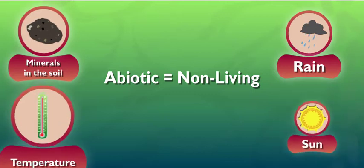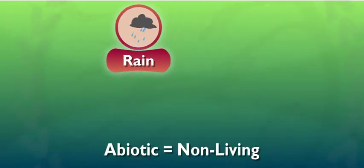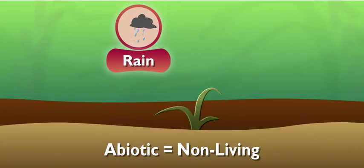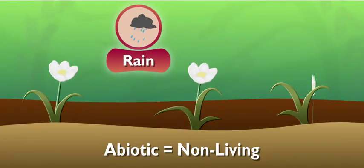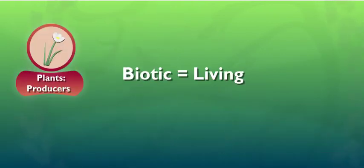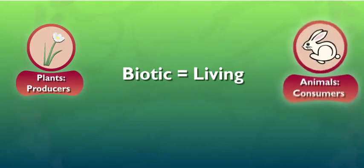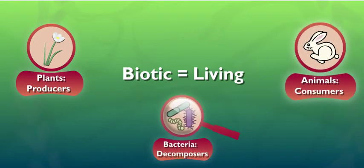Without abiotic factors like rain, the plants in this ecosystem wouldn't be able to stay healthy or grow. What's a biotic factor, then? Biotic means living. The plants, animals, and even the bacteria found in the forest are all biotic factors.